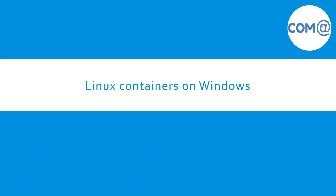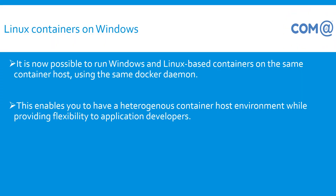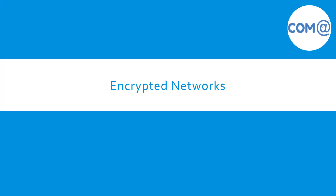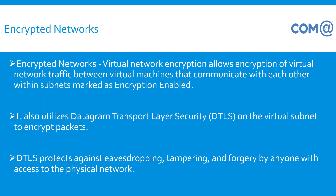We also have a new feature of Linux containers on Windows, where we can run Windows-based machines as well as Linux-based containers on the same host. Additionally, there is an encrypted networks feature — virtual networks can now be encrypted, which was not available in earlier versions. Windows Server 2019 uses Datagram Transport Layer Security (DTLS), which can be configured for a specific subnet to encrypt packets so that data is secured in the virtual network.